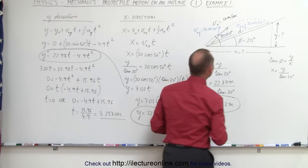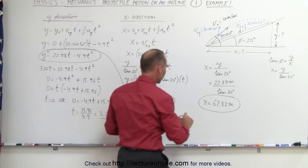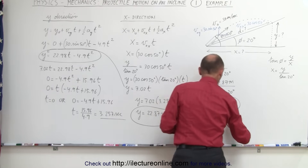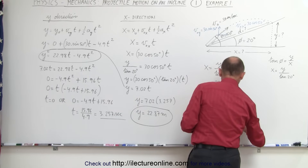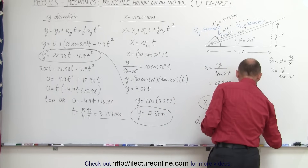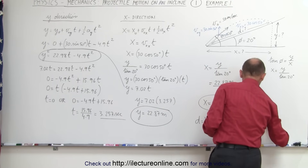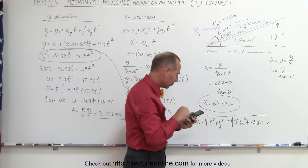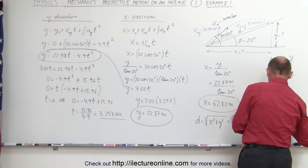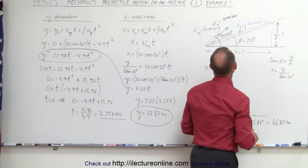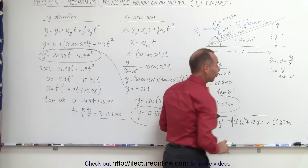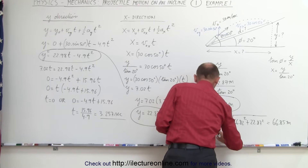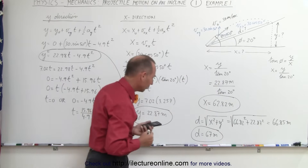Finally, to find the distance along the incline, d equals the square root of x-squared plus y-squared, which is the square root of 62.82 squared plus 22.87 squared. Taking the square root gives 66.85 meters. Rounding to two significant figures, d equals 67 meters.